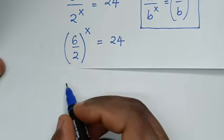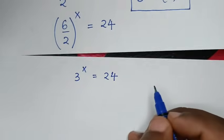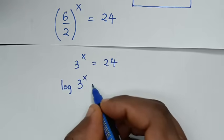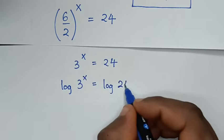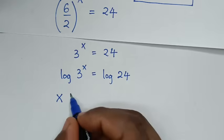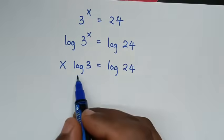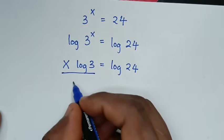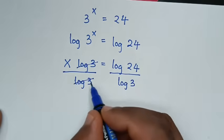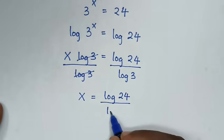6 divided by 2 is 3, so it will be 3 power of x is equal to 24. From here we'll apply log in both sides. Then it will be log of 3 power of x is equal to log of 24. This power x will move to the base, so it will be x log of 3 is equal to log of 24. So from here we'll divide by log of 3 in both sides, then it will be x is equal to log of 24 over log of 3.